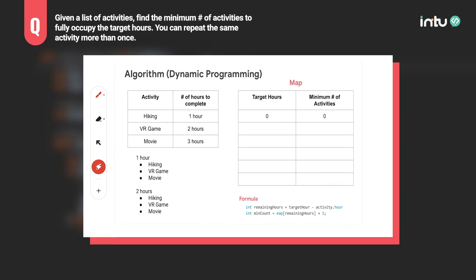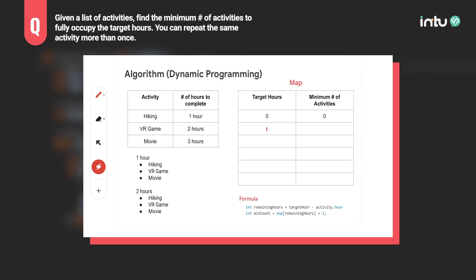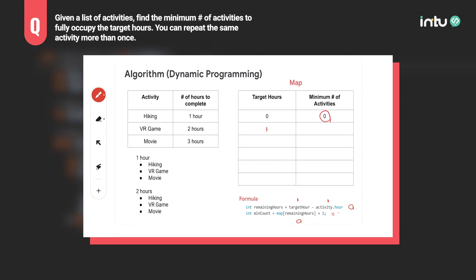Let me illustrate how we can exactly accomplish this. Let's start with one hour as our target. We go through all the given set of activities and see if including any one of them would yield the minimum number in total. Starting with hiking: target hours is one, activity hours is one, so remaining hours becomes zero. Map of zero is zero, plus one, so our min count becomes one.